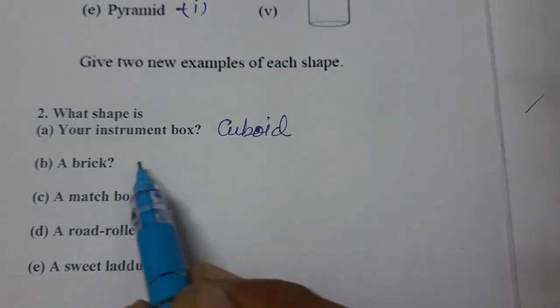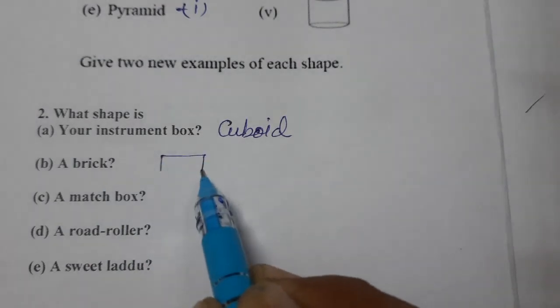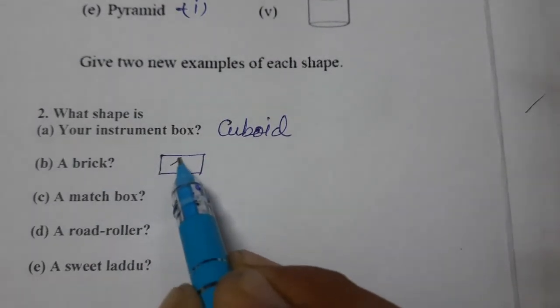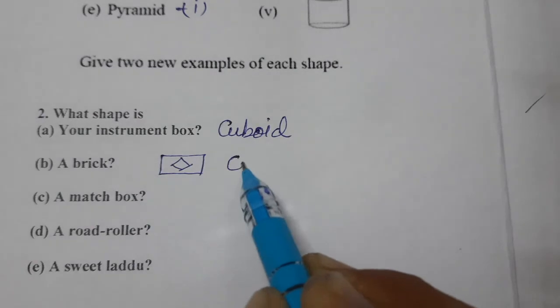Then comes brick. Brick is also in the shape of cuboid only, so cuboid.